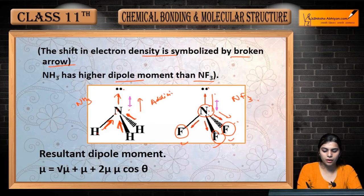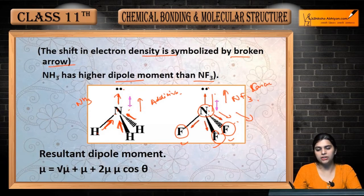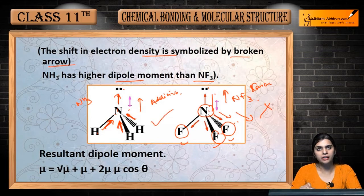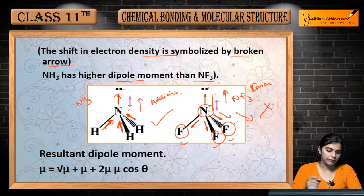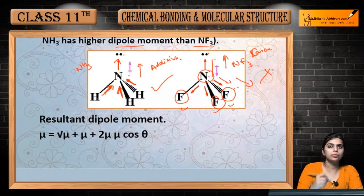So NH3 has a higher dipole moment than NF3. In NH3, the dipole moments are additive — here is upward — while in NF3 they partially cancel because the bond dipoles point downward toward fluorine while the lone pair points up, so they oppose each other. That is why NH3 dipole moment is higher as compared to NF3.